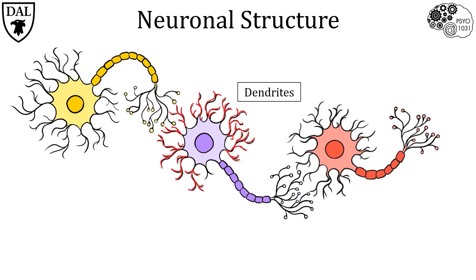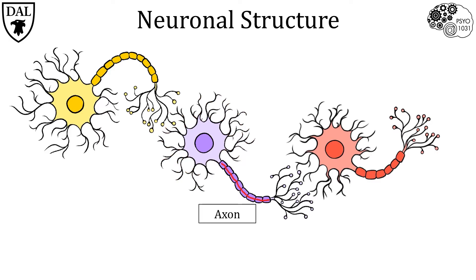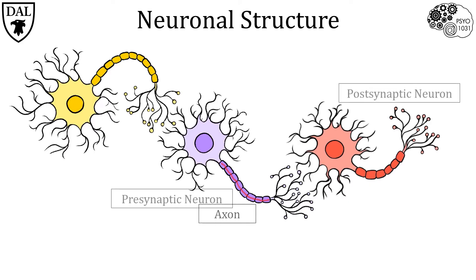Amazingly, some individual neurons have been shown to receive as many as 10,000 inputs on their dendrites. Also extending from the soma is the neuron's axon, which can be thought of as the neuron's highway to its targets. In this case the target is another neuron, but it could also be a muscle or a gland.